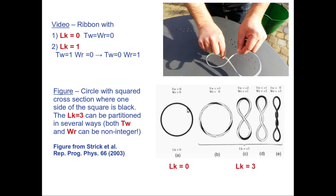In the linking number three situation, the black and white sides cross six times, giving linking number three. But this can partition — without topologically changing the molecule — into configurations with different twist and writhe values: twist plus two and writhe plus one; or twist plus one and writhe plus two; or twist zero and writhe plus three. When the twist is zero, the whole molecule is fully black because I see the top face always facing me — no twist but writhe has gone to plus three. The linking number always remains as an integer, while twist and writhe can be non-integer.